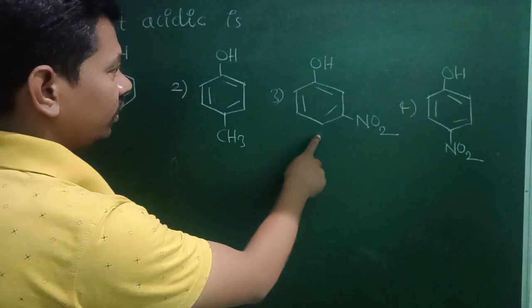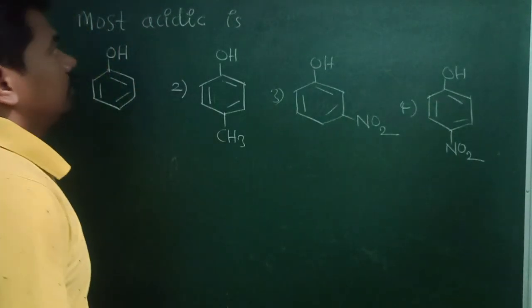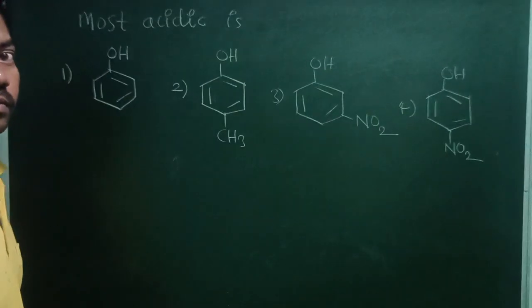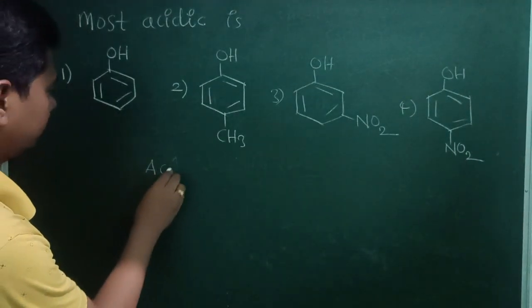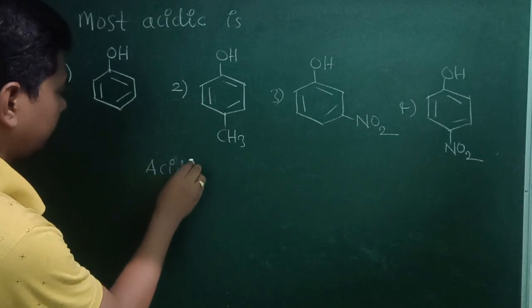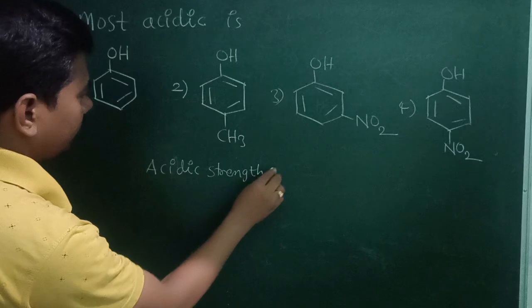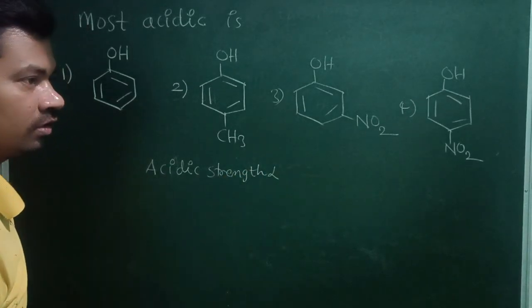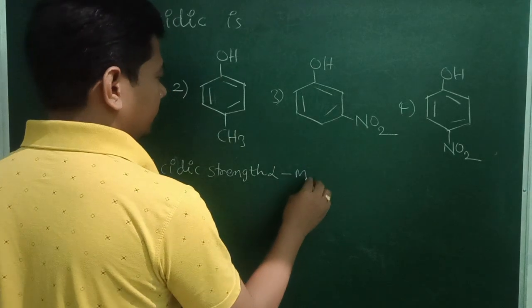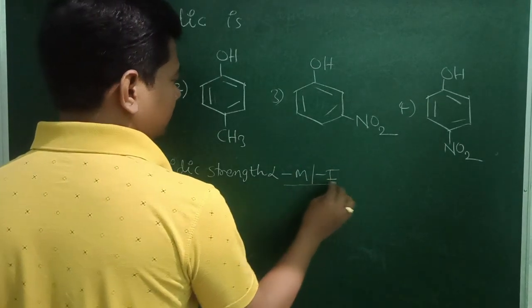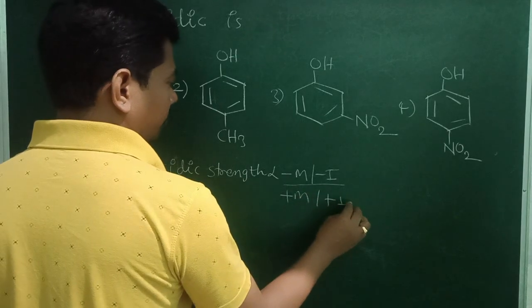metanitrophenol or paranitrophenol? So acidic strength is directly proportional to minus M or minus I, or inversely proportional to plus M or plus I.